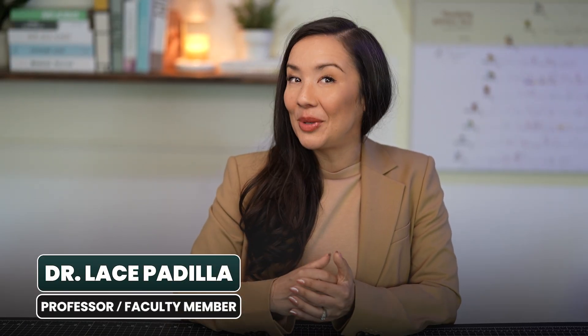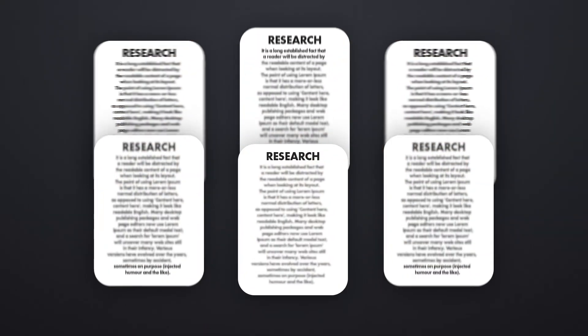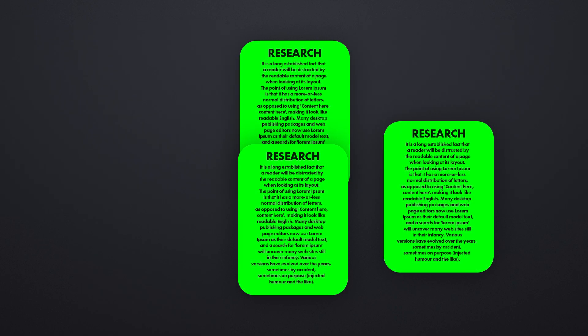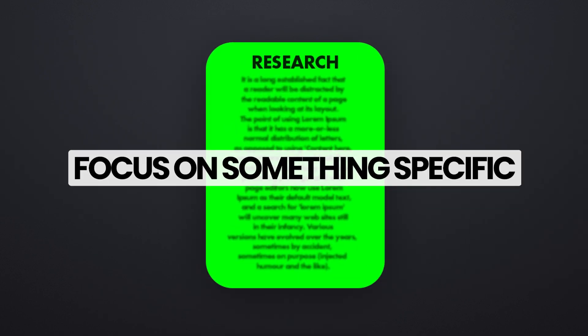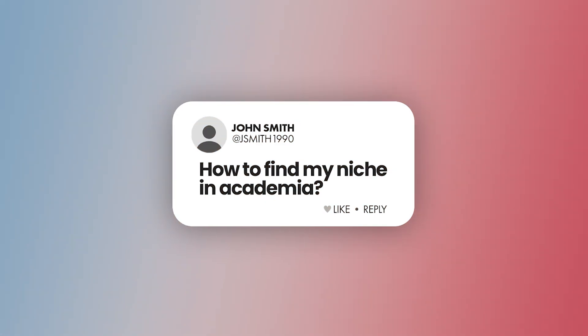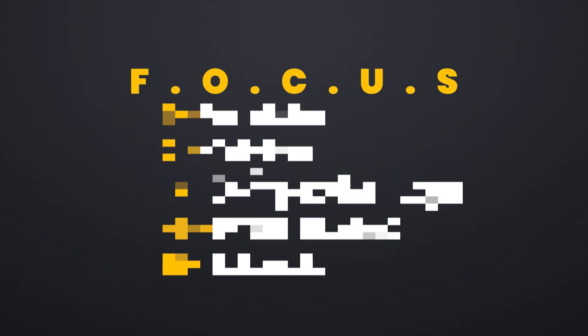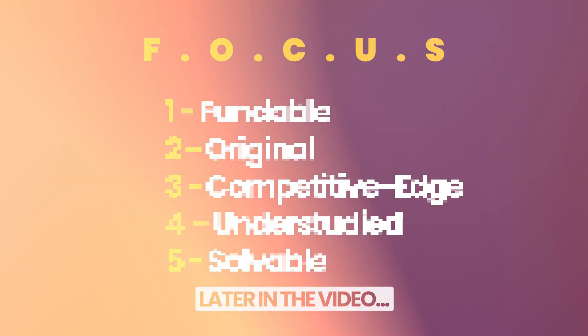Hi, my name is Dr. Padilla. I'm a professor in computer science and psychology, and I've been a professor for over five years now. Today, I wanted to talk about a topic that I get asked a great deal: how do you actually narrow down your research idea and focus on something specific? How do you find your niche in academia? This is a very broad topic, so I thought I'd break it down into an acronym — FOCUS — that will help you think about the main components that I think will make you successful in identifying your niche as a researcher and finding your research focus.